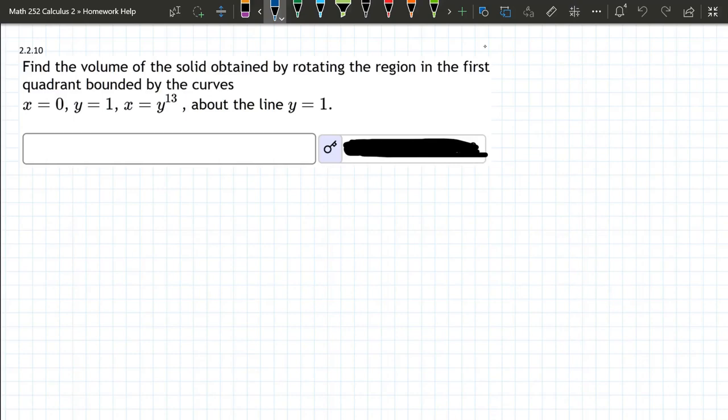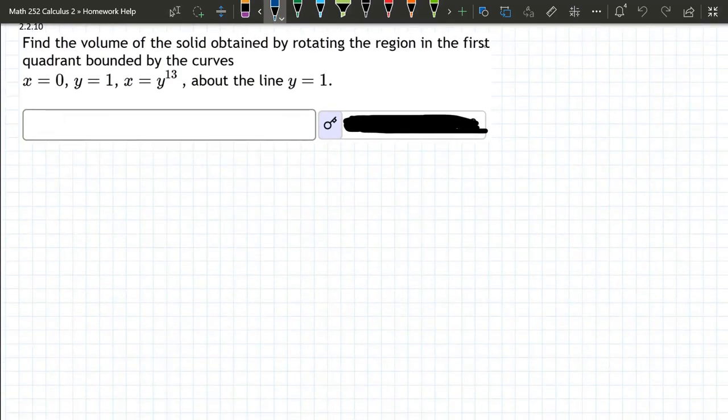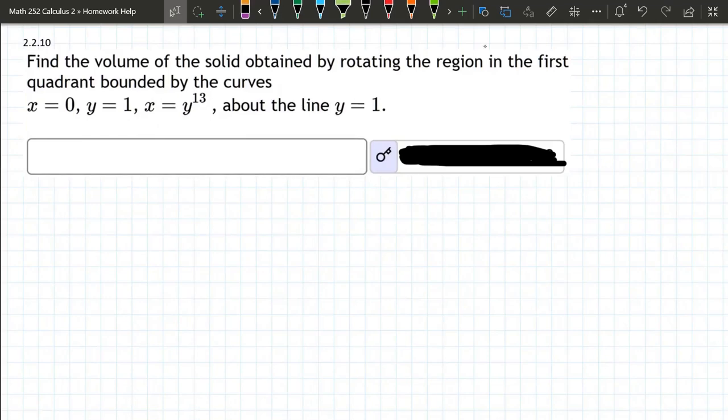Let's go ahead and graph this region first. X equals 0, Y equals 1. Those are easy to graph. So X equals 0 is the Y axis, and Y equals 1.